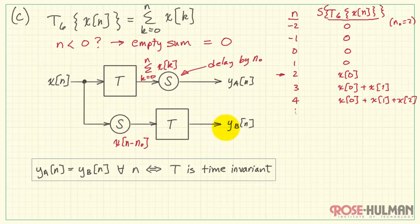Continuing on the bottom track, we have our shifted input passing through our system. We would do as before, sum from k equals 0 to n, and the specific input is X[k - n_0].